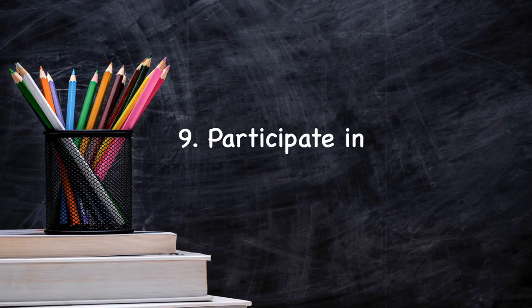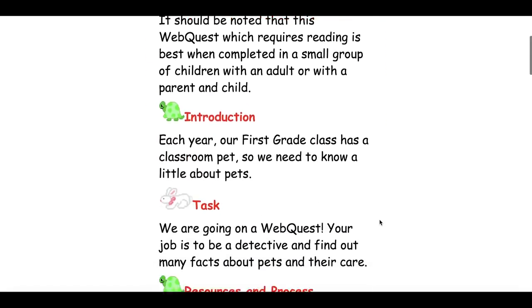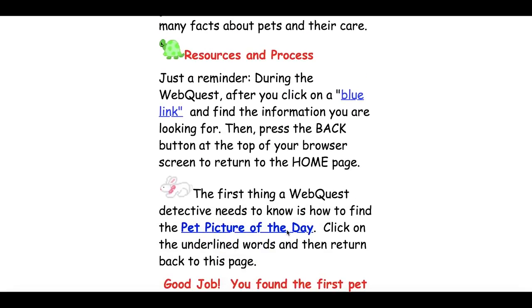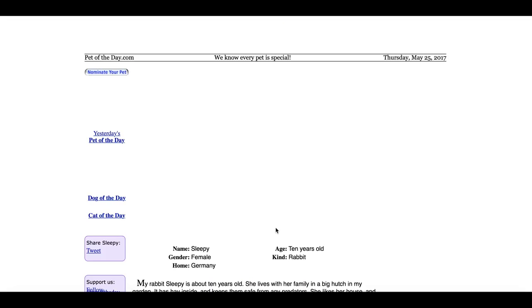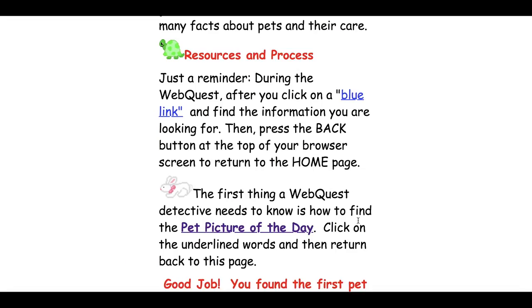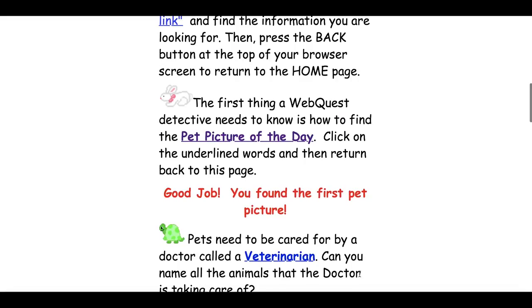Number nine: participate in a web quest. Web quests encourage students to find and process information in engaging contexts, adding an interesting spin to the research process. These free online adventures could, for example, place students in the role of a detective. To solve a specific case, they may have to collect clues and information related to a curriculum topic by scouring certain sources and web pages.